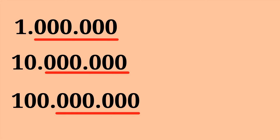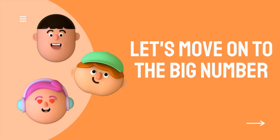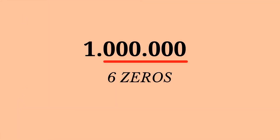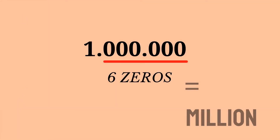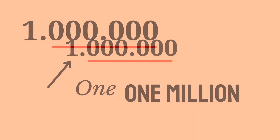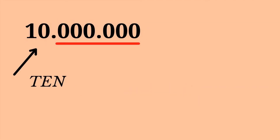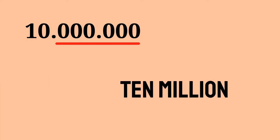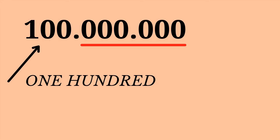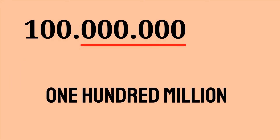Now let's move on to the big numbers. We have six zeros, so this is a million. If you see six zeros, that's million. So this is one million. And this is ten, so ten million. And this is one hundred, so one hundred million.